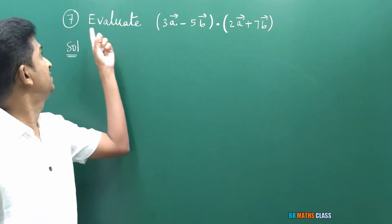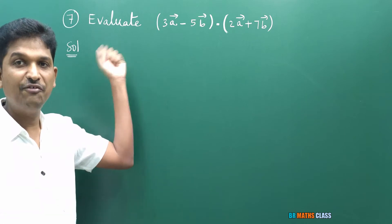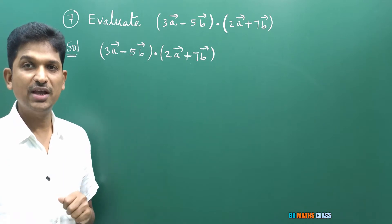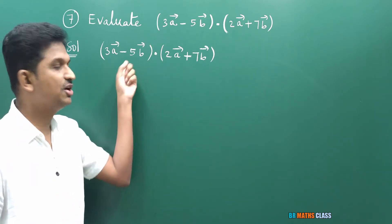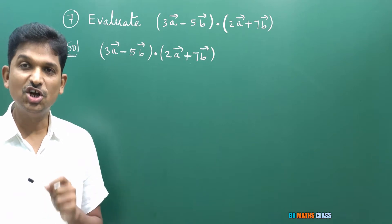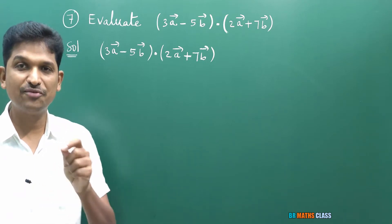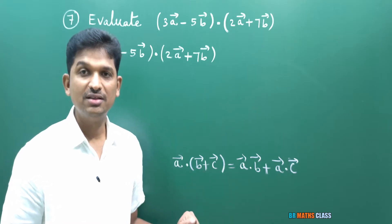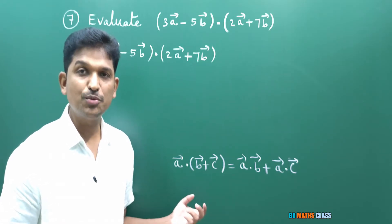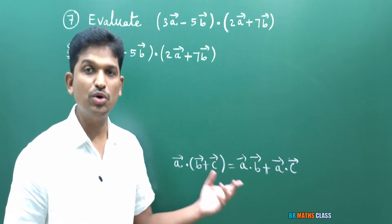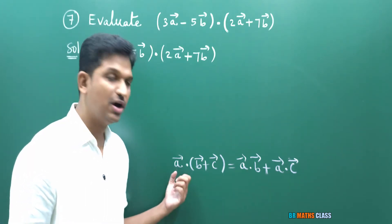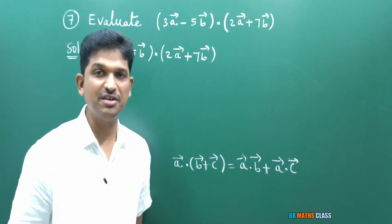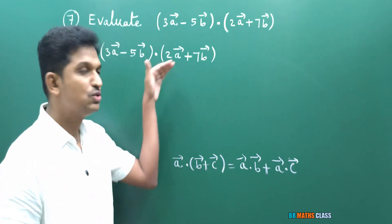You observe question number 7 — what they are asking: evaluate the dot product of these two vectors. We know that dot product is distributed over vector addition. That formula tells you that A̅ · (B̅ + C̅) can be written as A̅ · B̅ + A̅ · C̅. I will use this formula to simplify this.